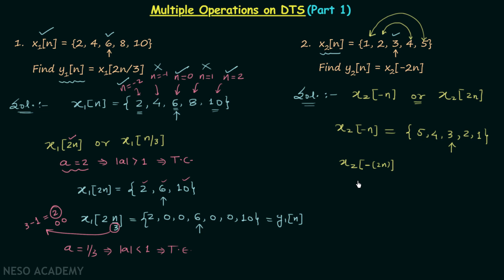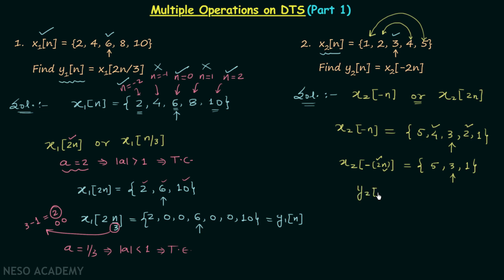Now we apply time scaling (time compression) with factor 2 to x2(-n) to get x2(-2n). We select values at integer multiples of 2: 4 is at n=-1 and 2 is at n=1, so these are excluded. We keep values at n=-2, 0, and 2, which are 5, 3, and 1. Therefore y2n = [5, 3, 1] with 3 at n=0.